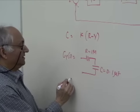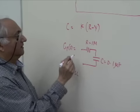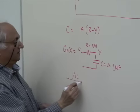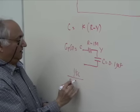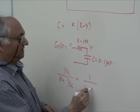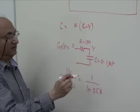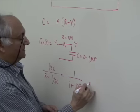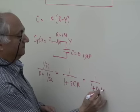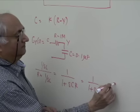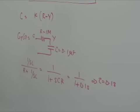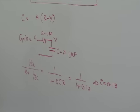This gives a transfer function and here is C and here is Y. The transfer function will be 1 over 1 plus SCR. R times C, the time constant, is 0.1 second. So this is the open loop time constant of the plant, 0.1 second.